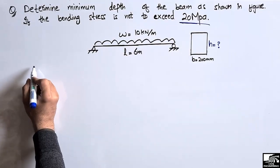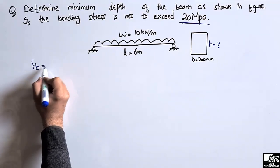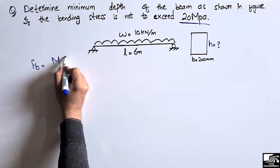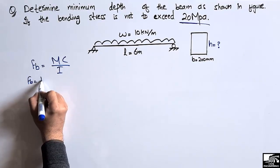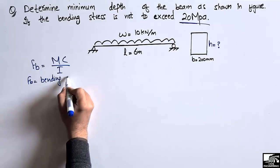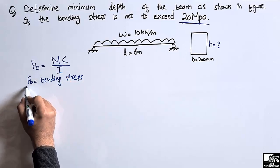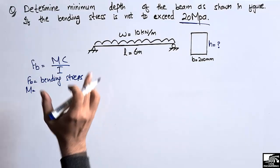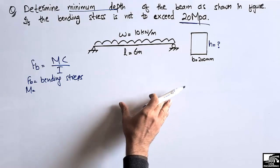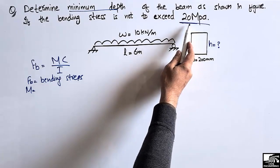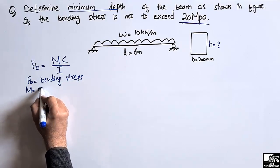For this, we can use the bending stress formula: the flexural stress f_B is equal to M·C over I, where f_B is the bending stress at any point in the beam, M is the bending moment value. Since we are finding the minimum depth of the beam required to not exceed 20 megapascals bending stress, we have to find out the maximum bending moment.